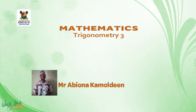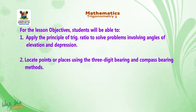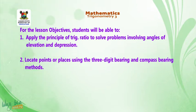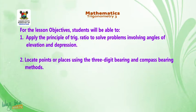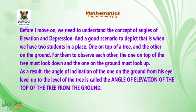For the lesson objectives, students will be able to: one, apply the principle of trig ratios to solve problems involving angles of elevation and depression; two, locate points or places using the three-digit bearing and compass bearing methods. Before I move on, we need to understand the concept of angles of elevation and depression.